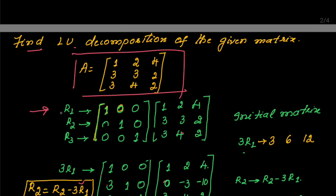The very first step is you need to add an identity matrix to the given matrix. This is the given matrix, which has elements 1, 2, 4, 3, 3, 2, 3, 4, 2. Now you are going to add an identity matrix — one which has all diagonal elements as 1s and all remaining elements as 0s.